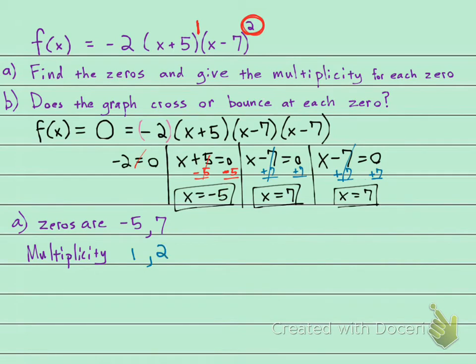And part b says, does the graph cross or bounce at each zero? Now you will probably also hear this as, instead of bouncing, instead of something bouncing off, they're going to say it touches and turns around. I call that bouncing: cross or bounce.